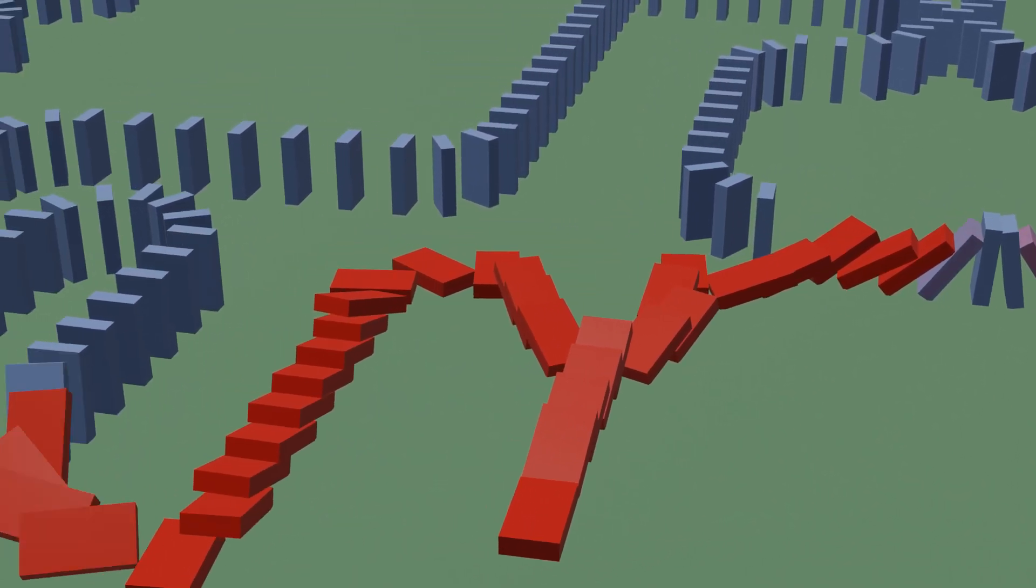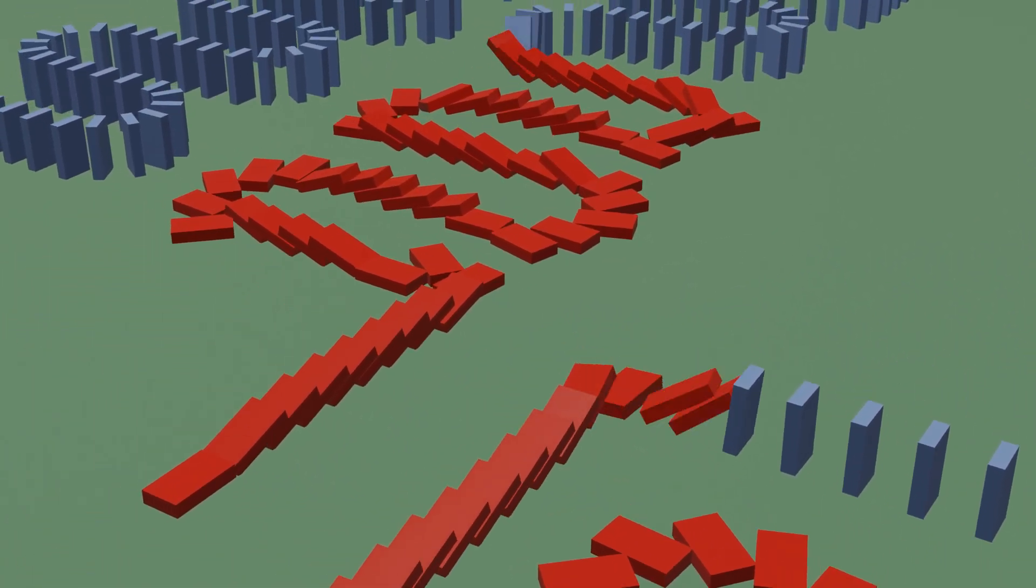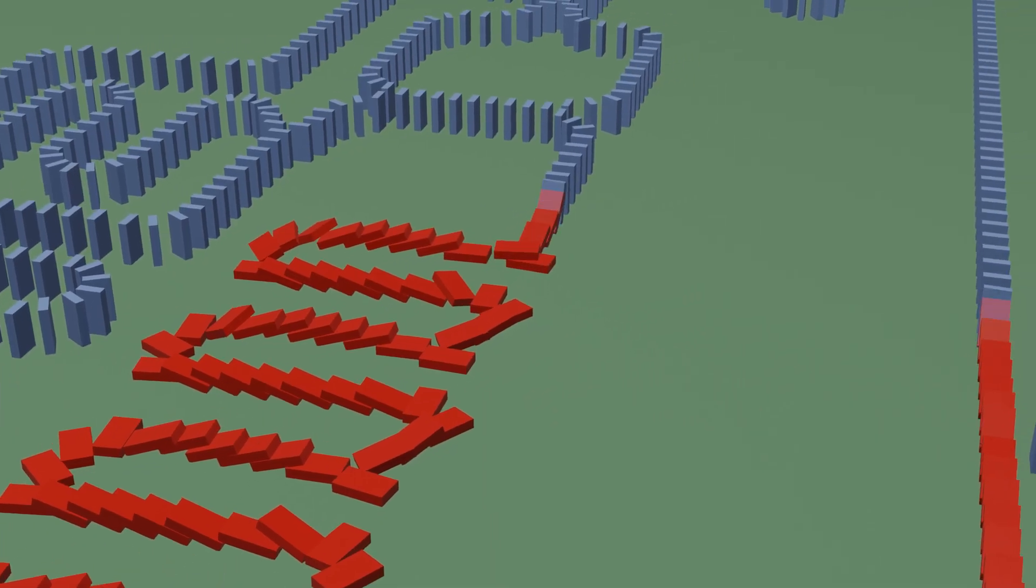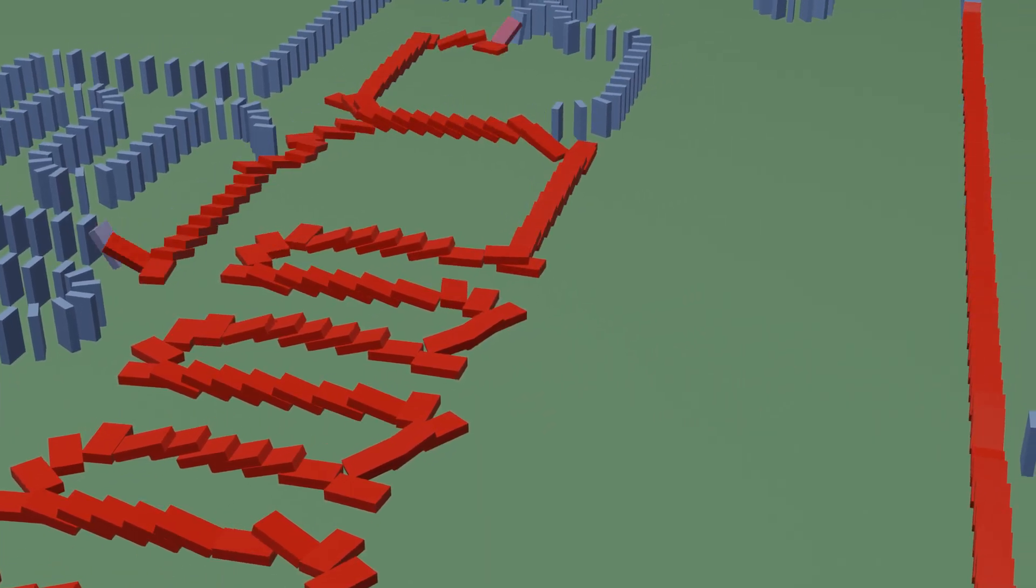By assembling enough dominoes into just the right sequence, we can create a structure out of those dominoes that acts as a computer circuit, representing numbers, calculating sums, and ultimately performing any computation we'd like.